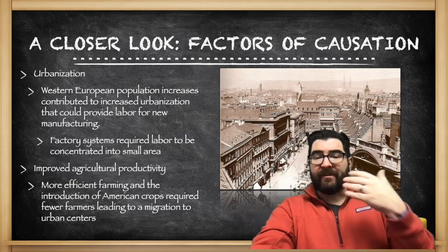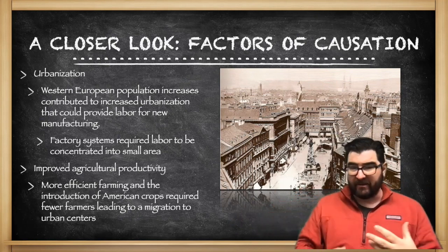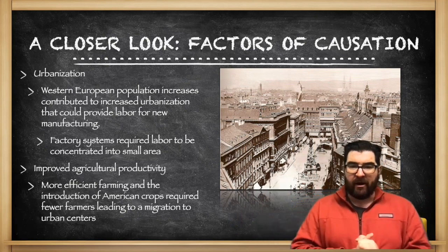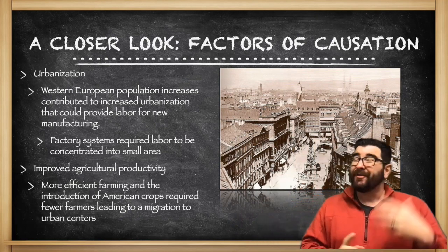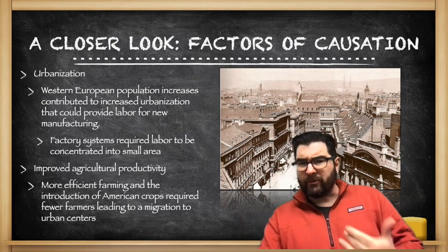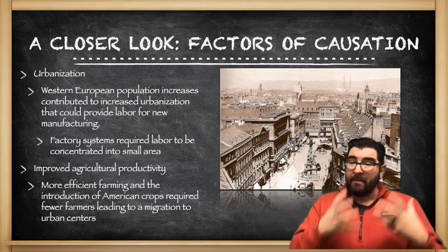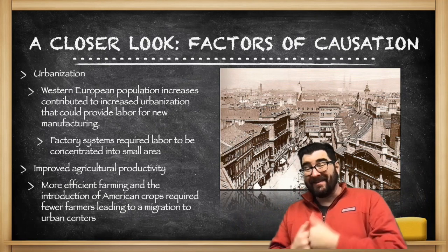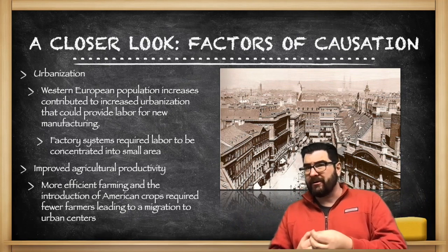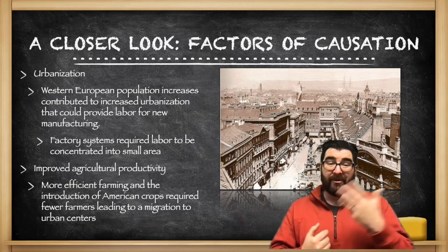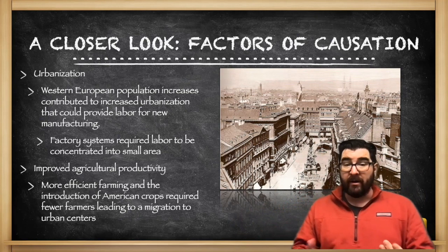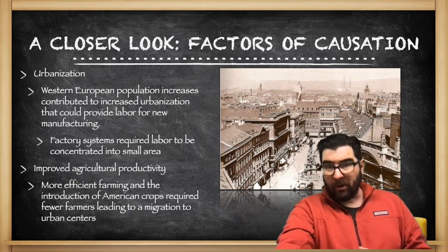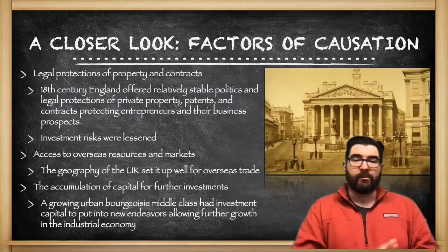This is going to feed the factory systems that require labor to be concentrated into smaller areas. There's also going to be improved agricultural productivity during this era. More efficient farms, along with the introduction of those American crops — especially the potato and corn — will require fewer farmers, leading to a migration of more people to urban centers.